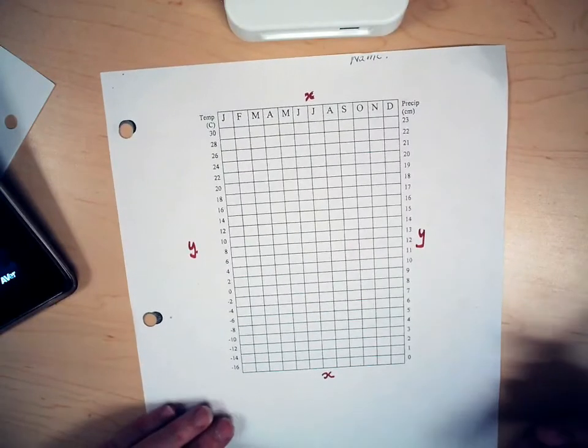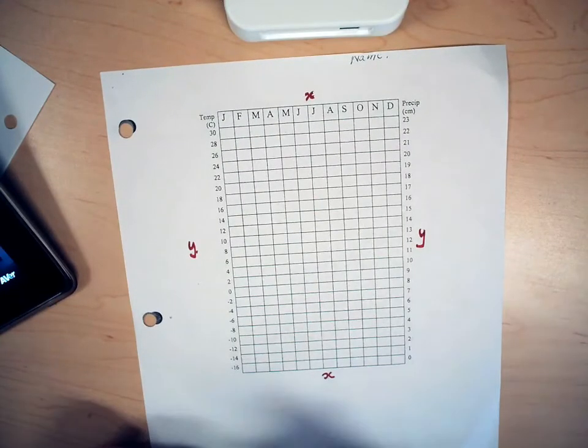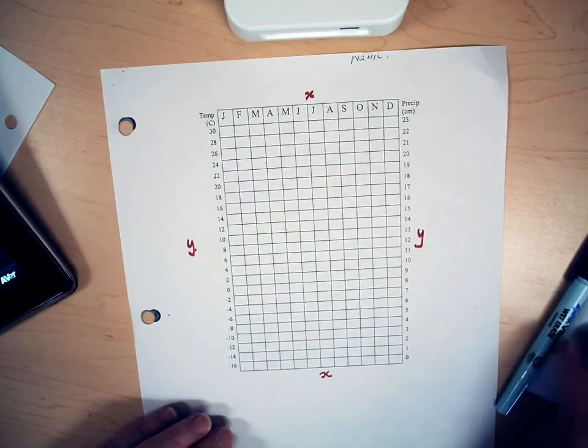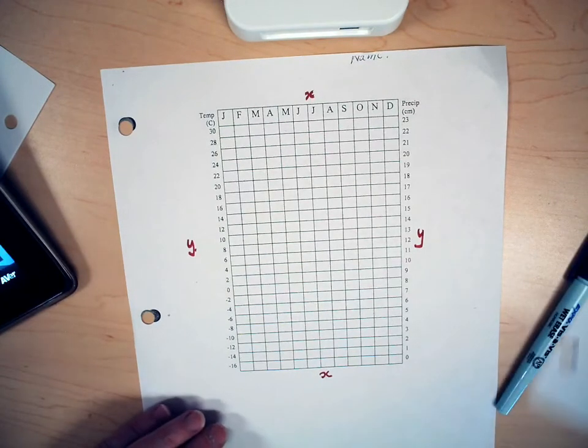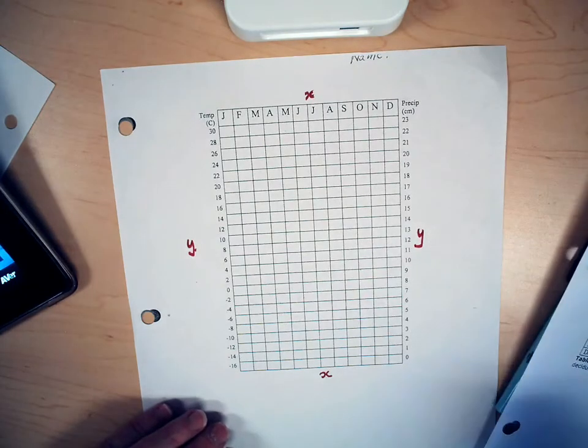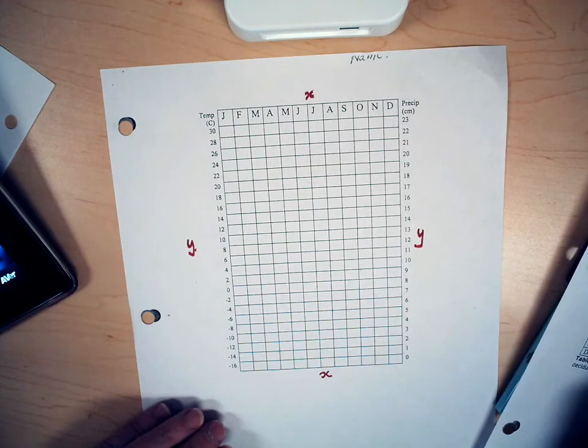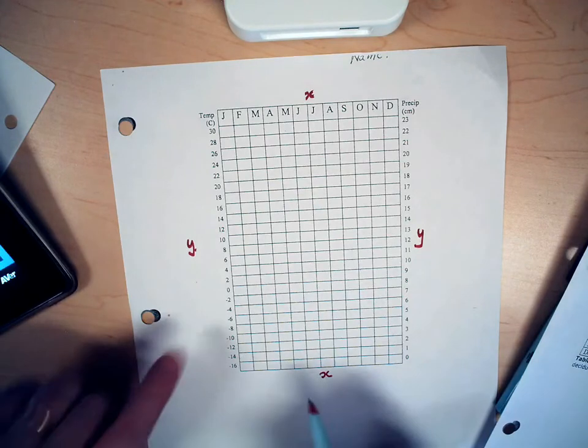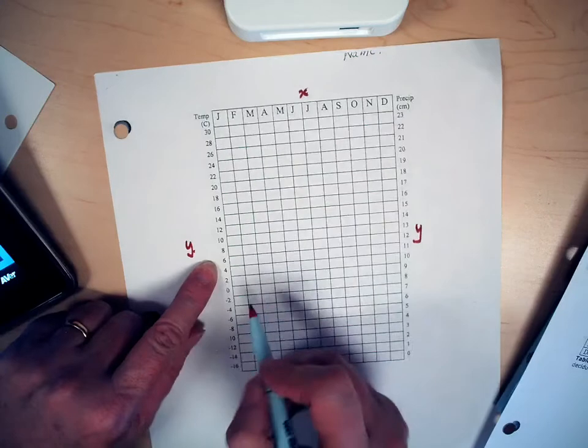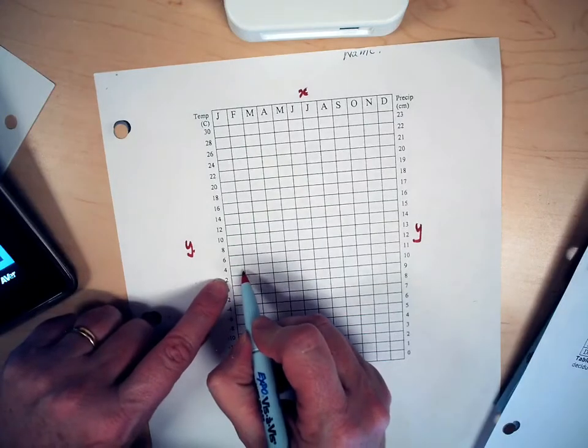This one's a little more straightforward because the axes are already labeled for us. So looking at the statistics I'm going to do the temperature graph first. January it says the temperature was 3.5 degrees centigrade. I'm working along this column and January 3.5 is about here.